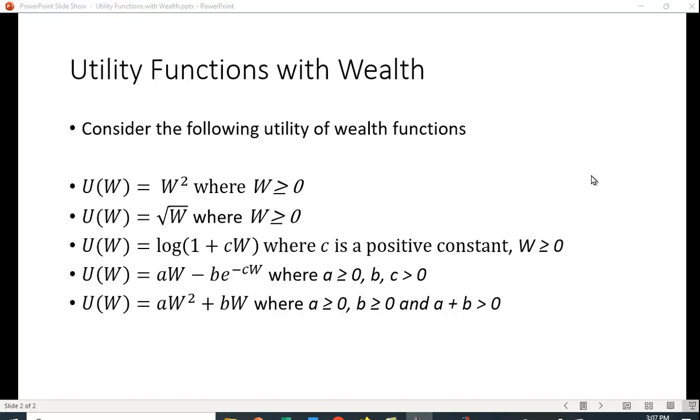And we can get even more complicated than that. Utility equals a constant times W minus b e raised to the minus cW power. And then finally, utility equals a times W squared plus b times W. And I've given the conditions for a, b, and c on the slide here.